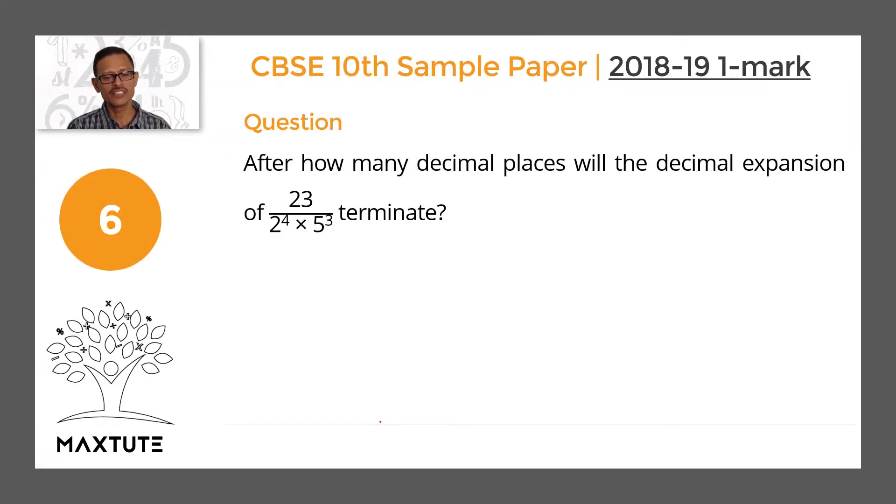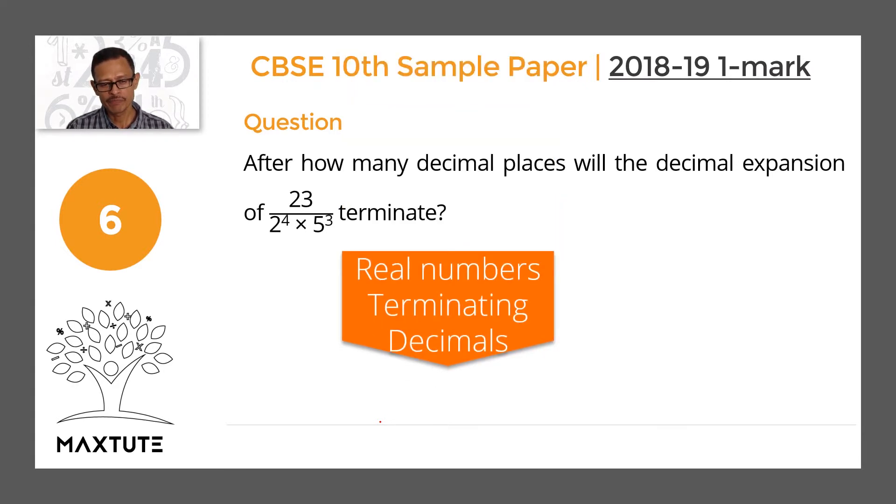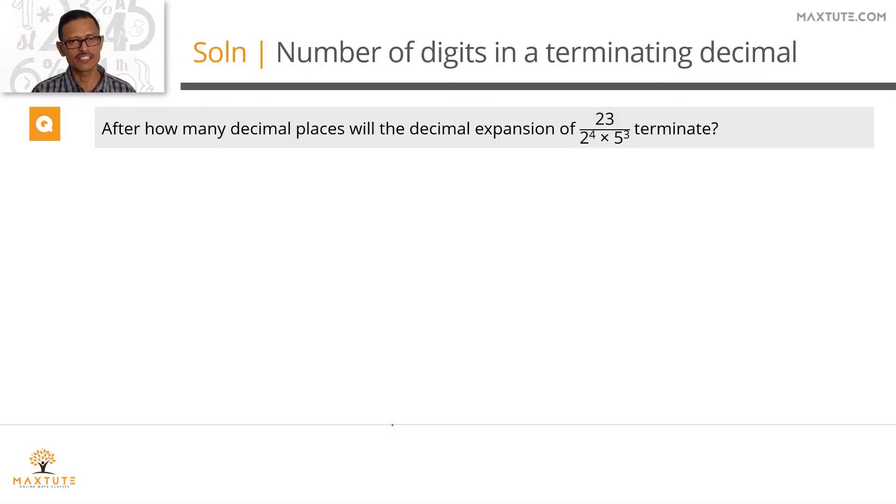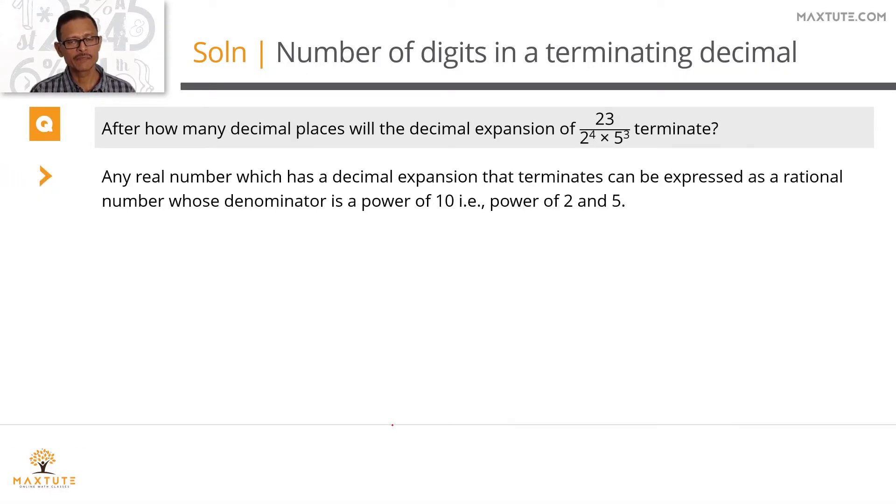Let's move to the last question. This appeared from real numbers. Terminating decimals is the concept. After how many decimal places will the decimal expansion of 23 divided by 2 raised to the power of 4 into 5 cubed terminate? Any real number which has a decimal expansion that terminates can be expressed as a rational number where the numerator is an integer and the denominator is a power of 10.